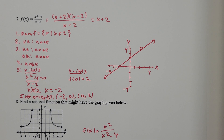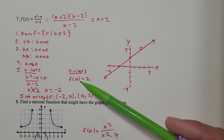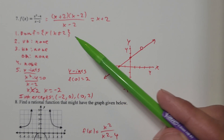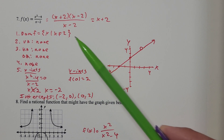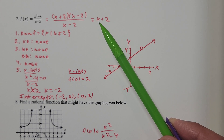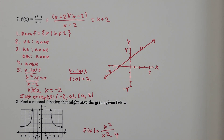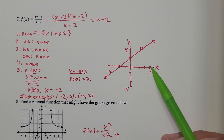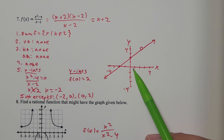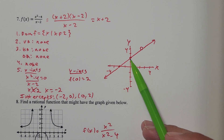To get the y-intercept, x needs to be 0. We're not using 2, we're using 0, so let's plug that in: 0 plus 2 is 2. We're going to have two intercepts on this graph — they're at negative 2, 0 and at 0, 2. When I draw this curve, here's negative 2, 0 and here's 0, 2.